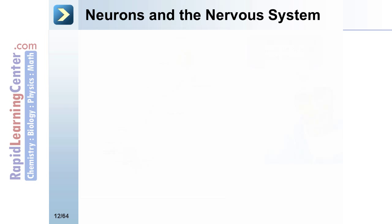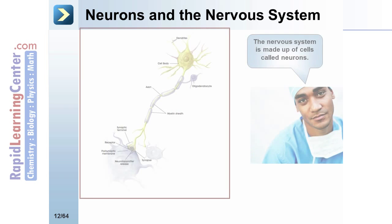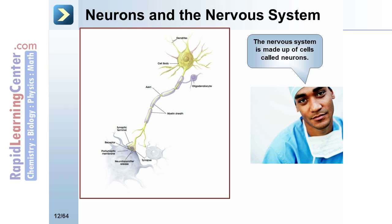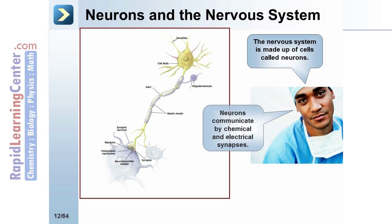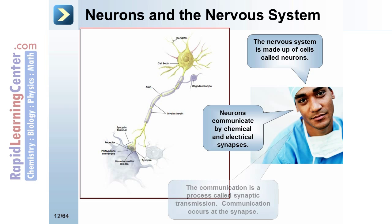The nervous system is made up of cells called neurons. Neurons communicate by chemical and electrical synapses. This communication is a process called synaptic transmission, and it occurs at the synapses.